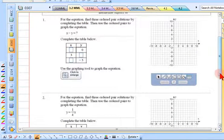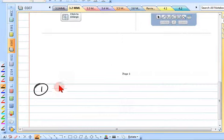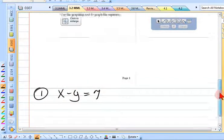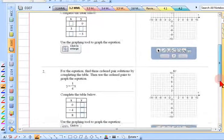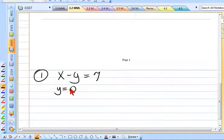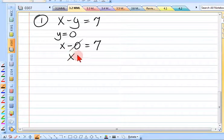And what it has, it says, for the equation, find three ordered pair solutions by completing the table. And we've got plenty of practice at doing that. Then use the ordered pairs to graph the equation. Problem number one, I'm going to come down and do my work.